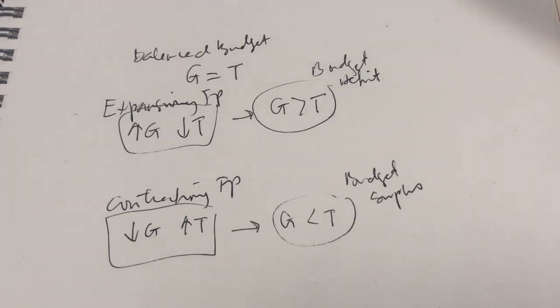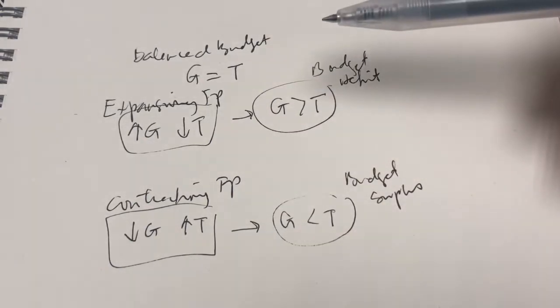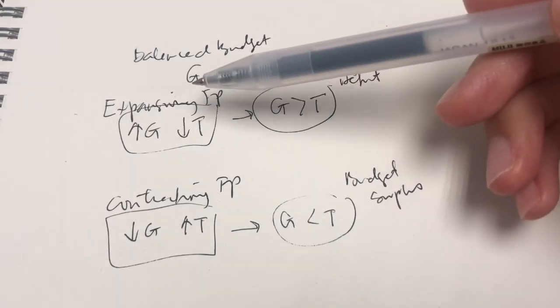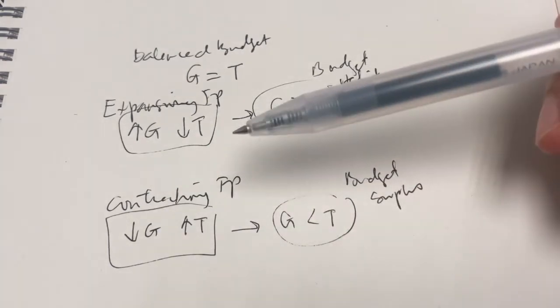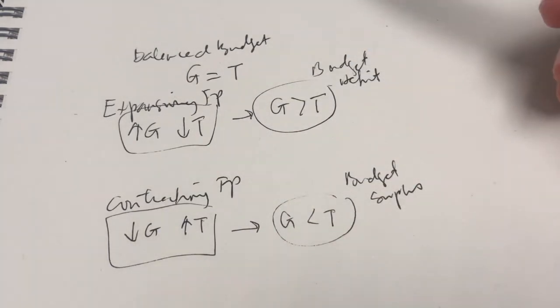However, there are others who prefer to use the opposite tools during the problems. So, sometimes they prefer to use a lower T during recession and even a lower G during inflation. That's normally used when they think the government is too large or inefficient.